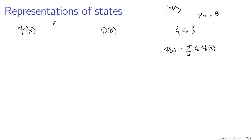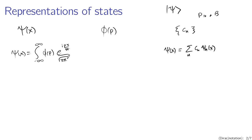We can also go between these two sorts of representations. You can think of psi of x as being given by an integral from minus infinity to infinity of phi of p, times e to the i p x over h-bar divided by root 2 pi h-bar, dp. This takes the coefficient phi of p and multiplies it by a state with known momentum, then superposes a whole bunch of states of known momentum to give the overall state.